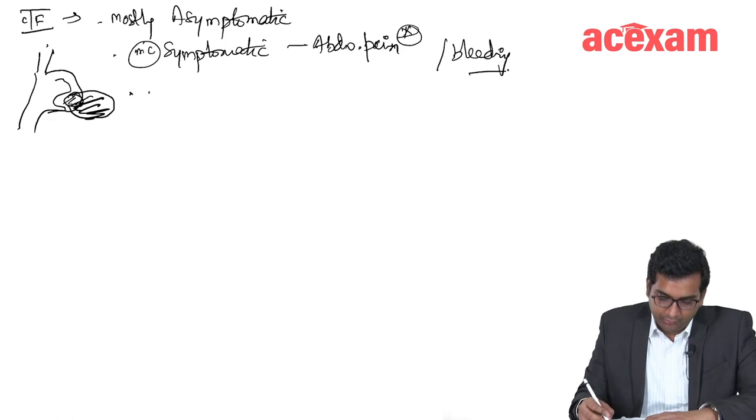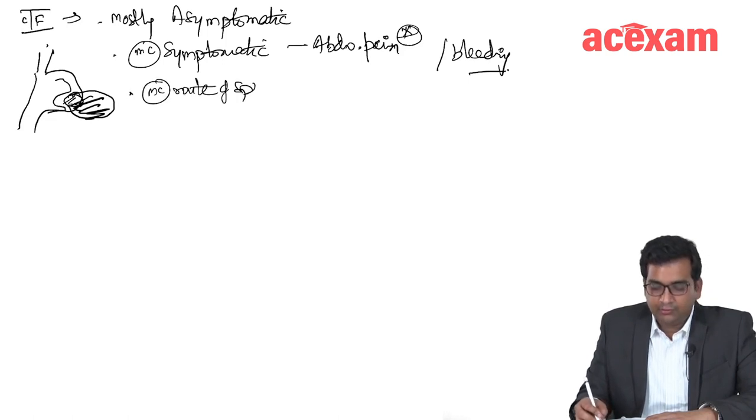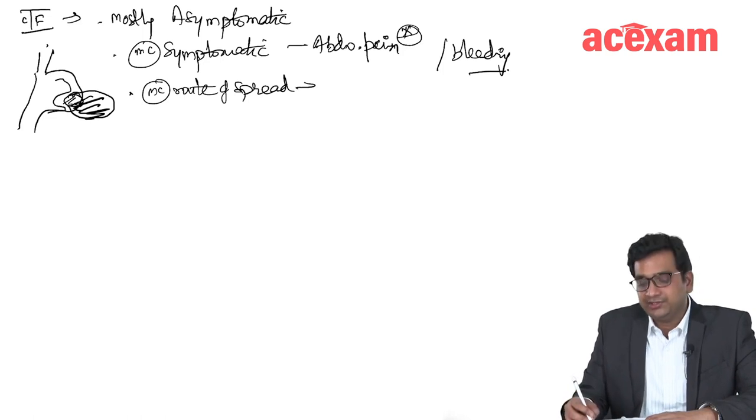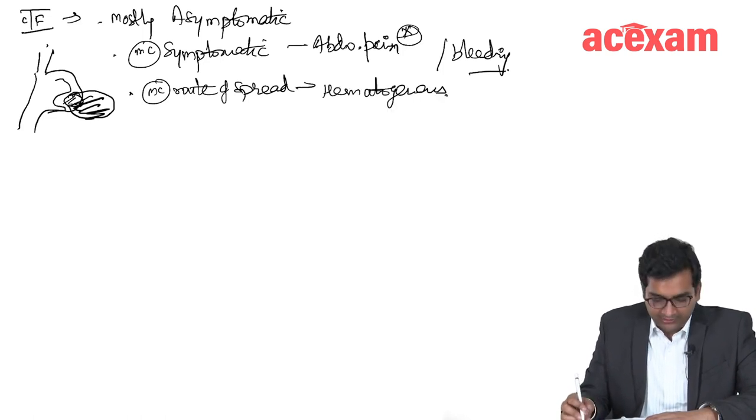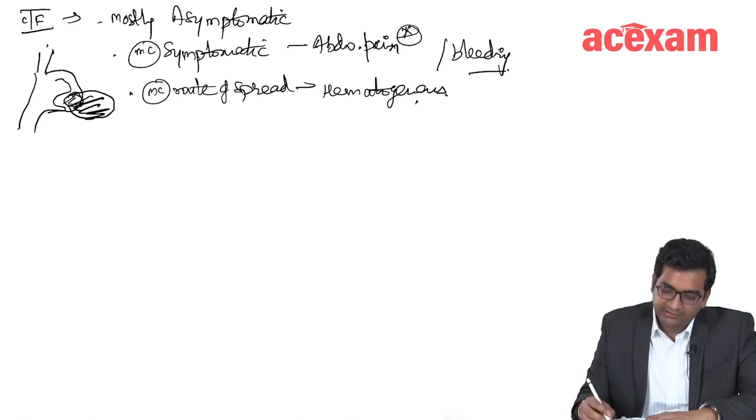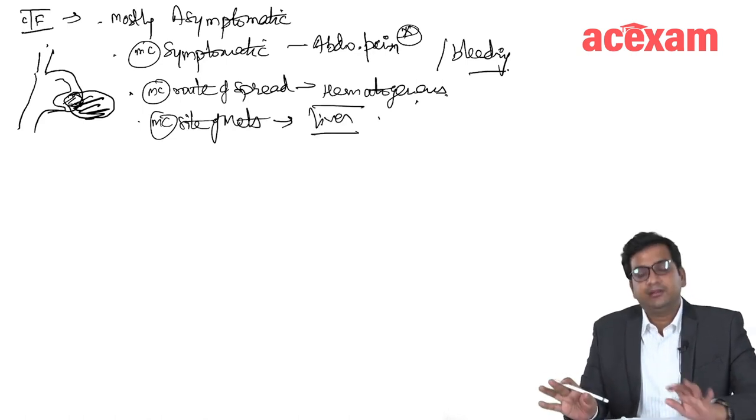The most common route of spread is hematogenous. There is no lymphatic spread. Because there is hematogenous spread, the most common site of metastasis is liver.